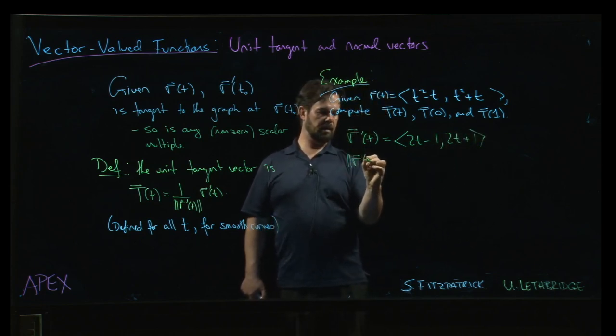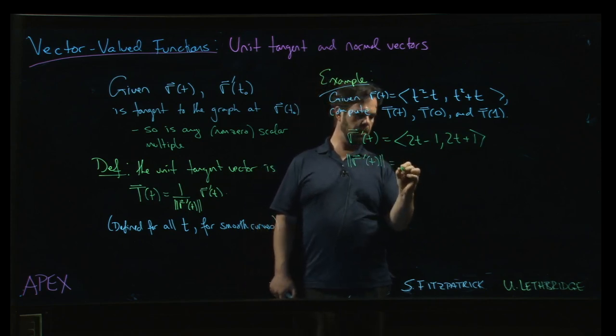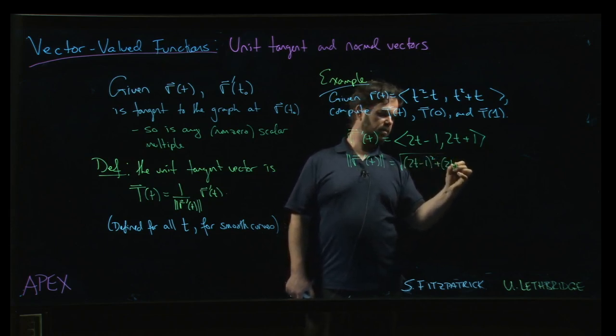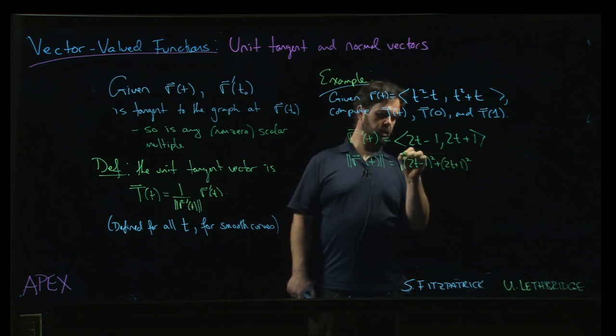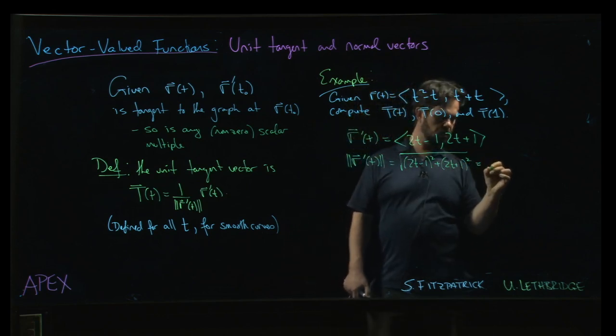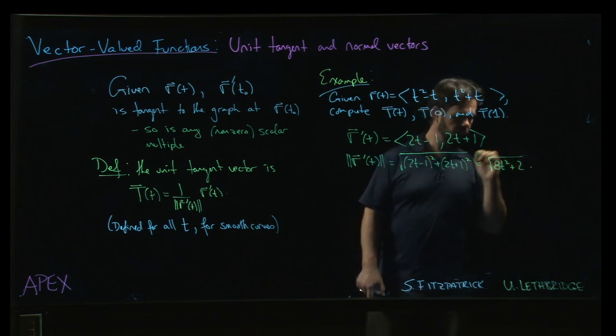we calculate the magnitude of r prime. So, 2t minus 1, all squared. 2t plus 1, all squared. And if you recall, we've worked through this calculation before and the result is 8t squared plus 2.